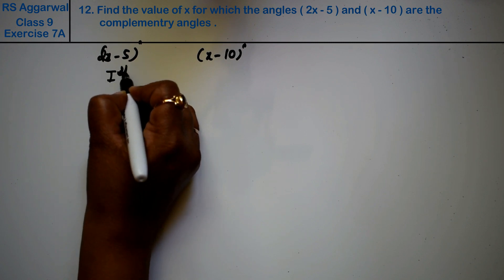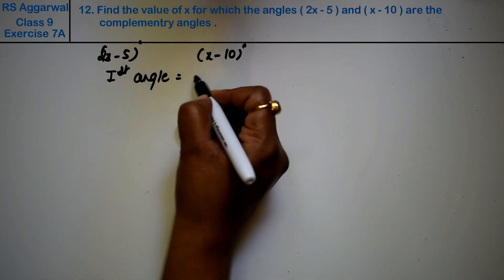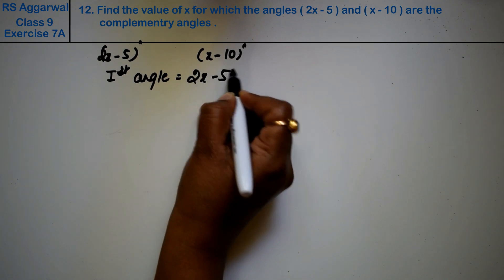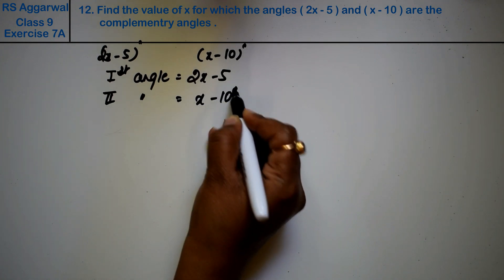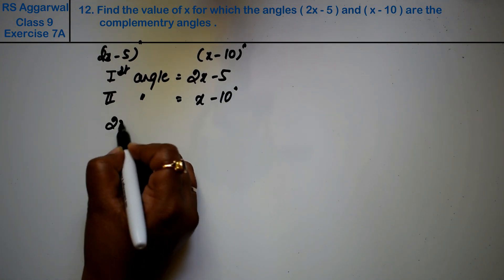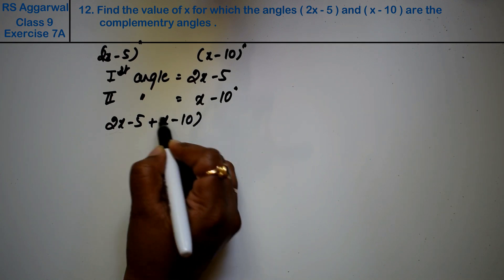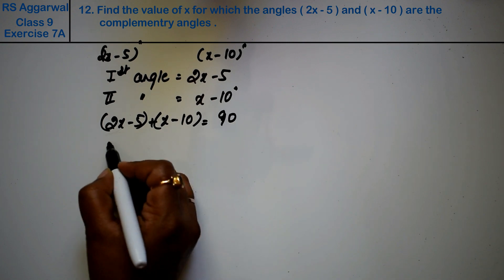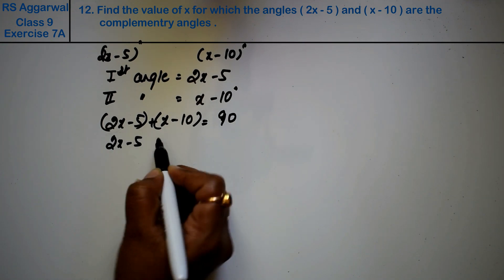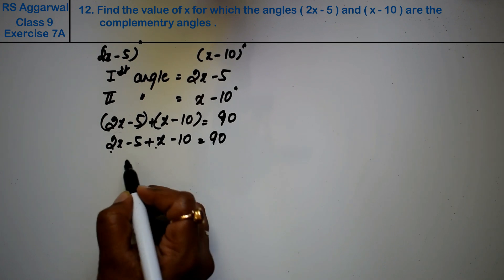Let the first angle be 2x - 5 degrees and the second angle be x - 10 degrees. The sum of these two angles, that is (2x - 5) + (x - 10), is complementary, which equals 90 degrees. So we have (2x - 5) + (x - 10) = 90.